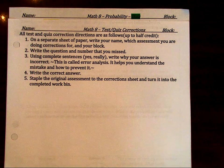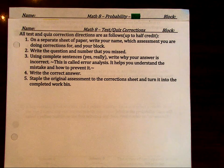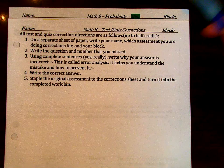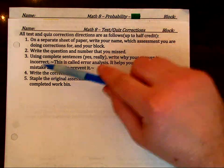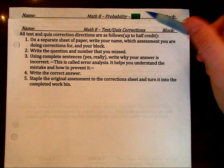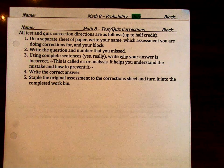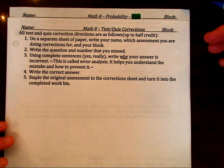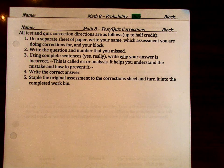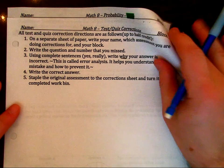On a separate sheet of paper, write your name, which assessment you're doing corrections for, and your block. Write the question and number you missed. Using complete sentences, write why your answer is incorrect. This helps you understand the mistake and how to prevent it. Write the correct answer, show your work, staple the original assessment to the corrections sheet, and turn it into the completed work bin. You can earn up to half credit.